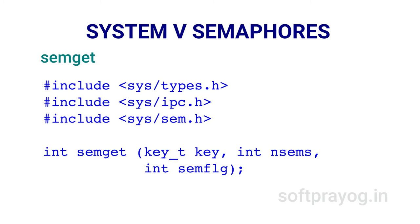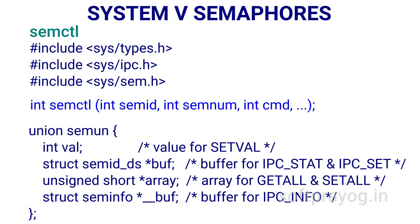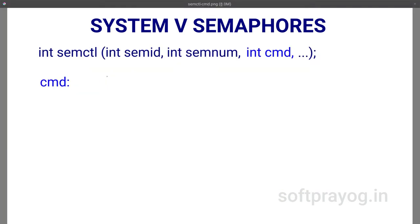You can find the SEMMSL value using the ipcs -ls command. If you are not creating the semaphore set and expect it to already exist when you make the semget call, you can pass nsems as 0. The semctl system call is for semaphore control operations. The first parameter semid is the semaphore set ID. The second parameter semnum identifies the semaphore number in the set. Semaphores are numbered starting with 0. The third parameter is the command identifying the semaphore control operation.